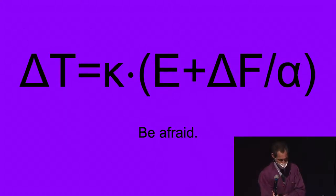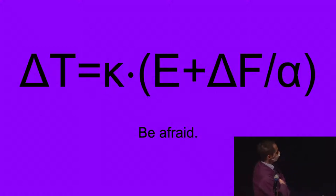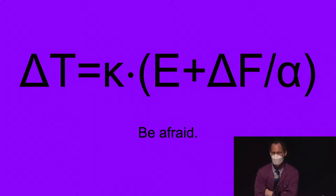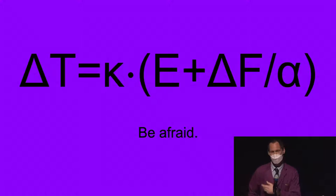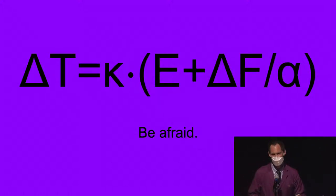This is why it's happening. That equation says that the rise in temperatures — delta T, global heating, not global warming, that sounds too wishy-washy — global heating is dependent on E, the amount of carbon dioxide we are putting out into the atmosphere, and F, which is any other things we are doing to make global temperatures increase: other greenhouse gases like methane, CFCs. K and alpha are just constants to make the units come out correctly. Global heating is due to carbon dioxide and other things.